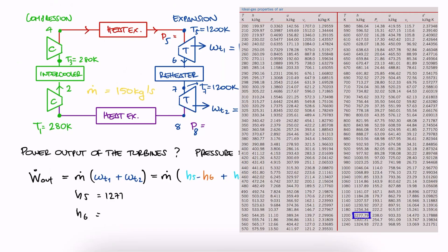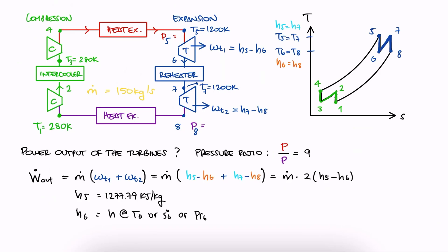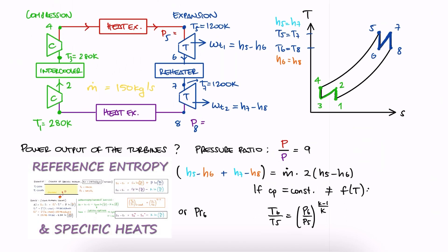H5 we can find right away because we have the temperature at the entrance of the turbine. As for H6, we know that we can find it if we have a property that defines state 6. If we had a gas here that has a constant specific heat as opposed to a function of temperature, we could use the relationship we derived in the reference entropy 12-minute lecture called approximate analysis.